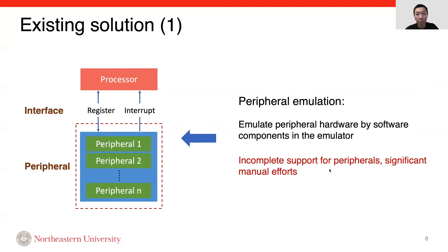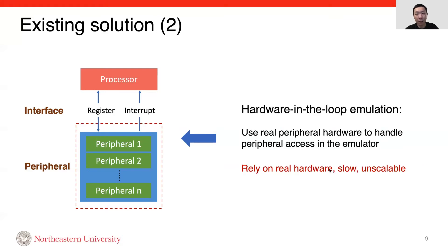To solve the problem, multiple types of solutions have been proposed. The first type is peripheral emulation, which emulates peripheral hardware by software components in the emulator. However, they can only provide incomplete support for peripherals, and they require significant effort for each peripheral. The second line of work is hardware-in-the-loop emulation. They use real peripheral hardware to handle peripheral access in the emulator. The limitation is that, because of using real hardware, the testing is slow and unscalable.